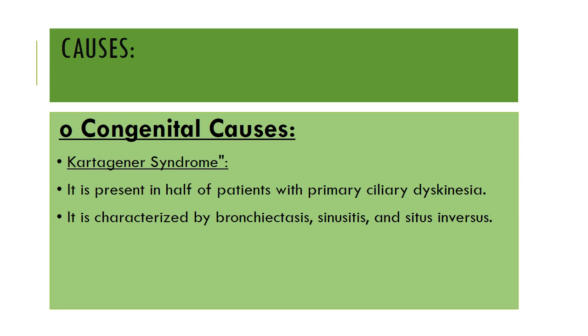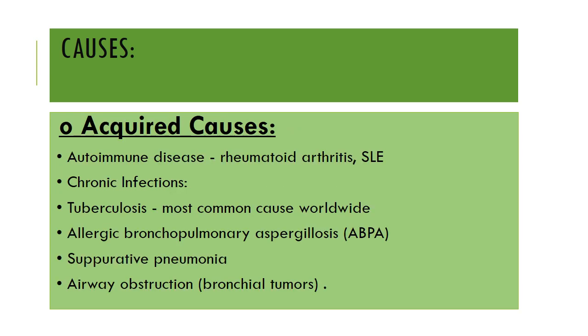Kartagener syndrome is present in 50% of patients with primary ciliary dyskinesia and it is characterized by bronchiectasis, sinusitis, and situs inversus.